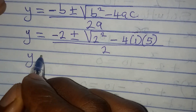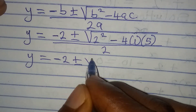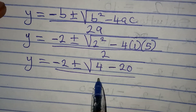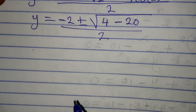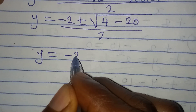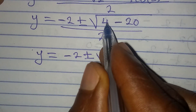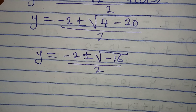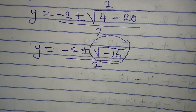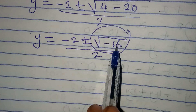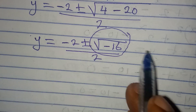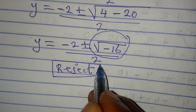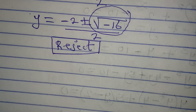Taking a further step, y equals minus 2 plus or minus square root of 4 minus 20, over 2. That gives 4 minus 20 equals negative 16. Since we are looking for the real value of x, and the square root of negative 16 is not real, this does not give a real solution. Therefore we reject it, and the only real value for y is y equals 2.